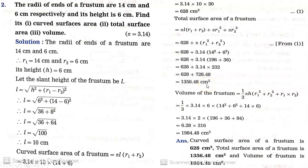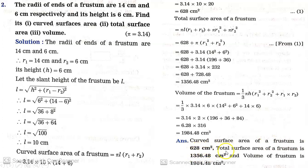Volume of the frustum = (1/3)πH(R1² + R2² + R1×R2). Substituting all values: (1/3) × 3.14 × 6 × (196 + 36 + 84) = 1984.48 cm³. Final answers: curved surface area = 628 cm², total surface area = 1356.48 cm², and volume = 1984.48 cm³.